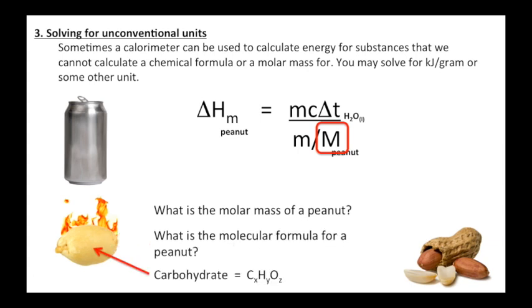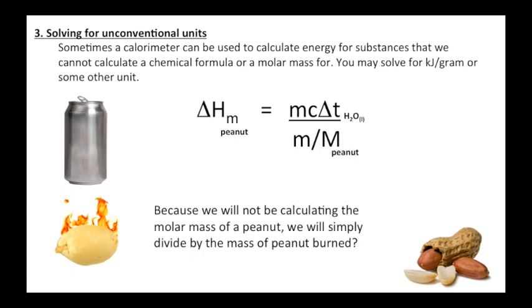What's the formula for a peanut? It's going to have some carbohydrates in it, CH2O like C6H12O6, but it has other things - it's got proteins in it, it's got oils. What's the molar mass? We can't calculate it practically because we will not be calculating the molar mass of a peanut. We will simply divide by the mass of the peanut burned.